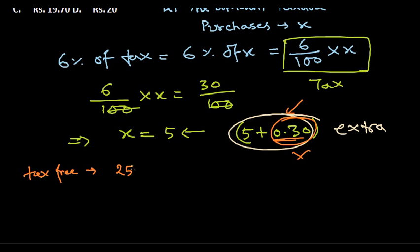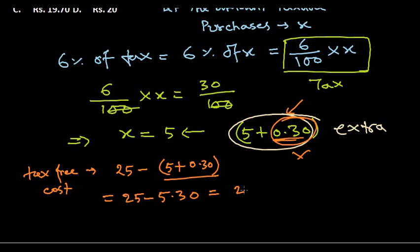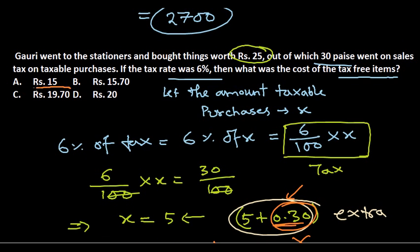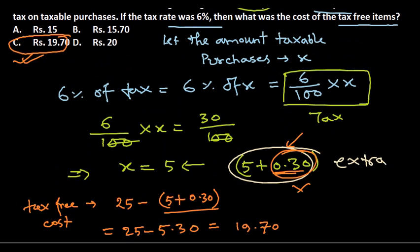So the tax-free item cost equals total amount minus taxable purchase including tax: 25 minus 5.30, which gives 19.70 rupees. The answer is option C — rupees 19.70. The most important thing is to add 0.30 to 5 before subtracting. That's why I picked this problem. Hope that's helpful, thank you.